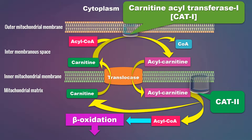To summarize this video: there are two key enzymes — CAT-1, attached to the outer mitochondrial membrane, which converts acyl-CoA to acyl-carnitine, and carnitine acyl-transferase-2 (CAT-2), attached to the inner mitochondrial membrane, which converts acyl-carnitine back to acyl-CoA. This transfer of activated fatty acid from the intermembranous space to the mitochondrial matrix with the help of carnitine is called the carnitine shuttle or carnitine transport system.